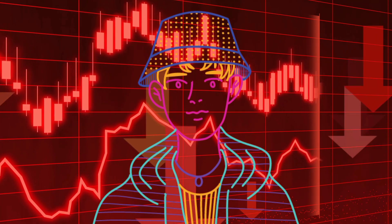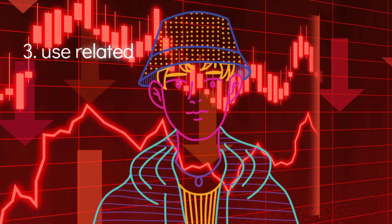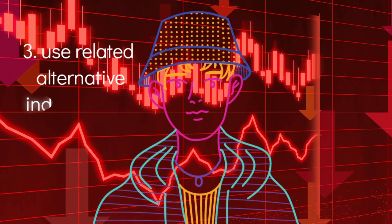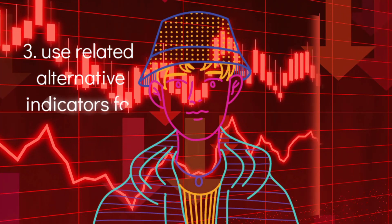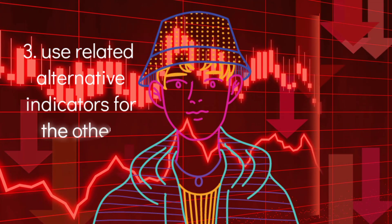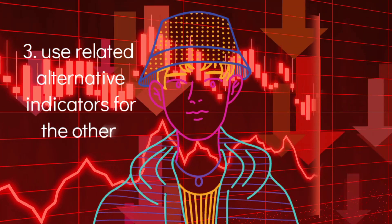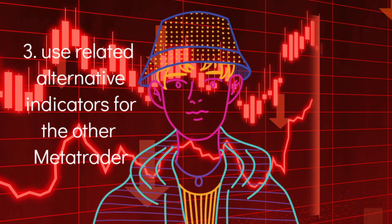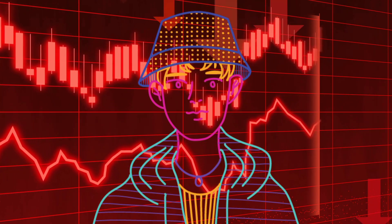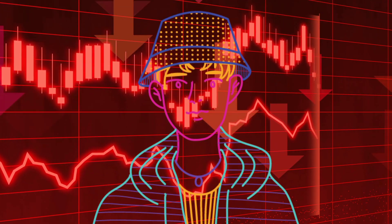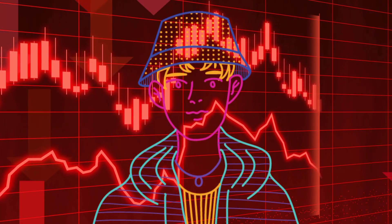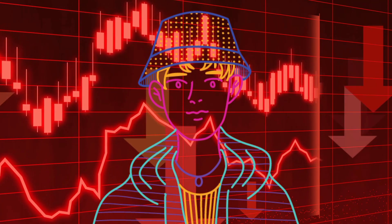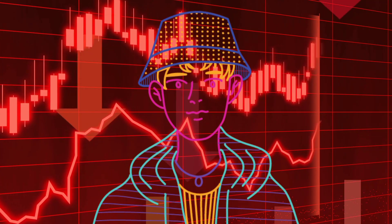The last way to convert an MT4 indicator to MT5 is to not convert one at all. All you can do without coding or spending money is by finding an alternative indicator available for the other MetaTrader. The MetaTrader website has thousands of indicators, both free and paid. So instead of converting one, you can simply download any related indicator for free.